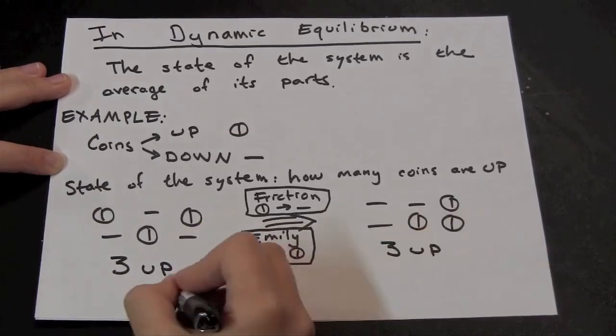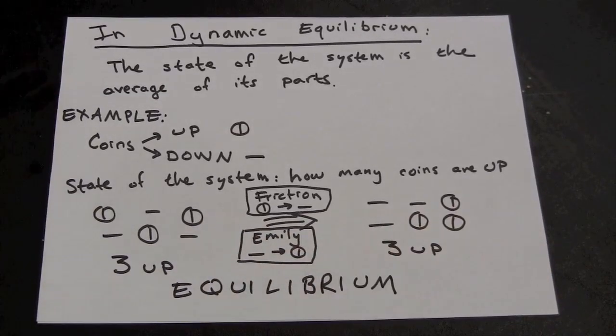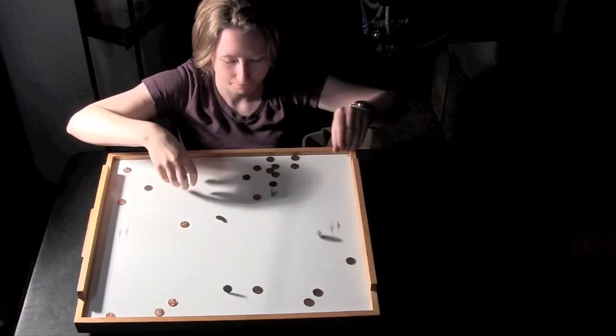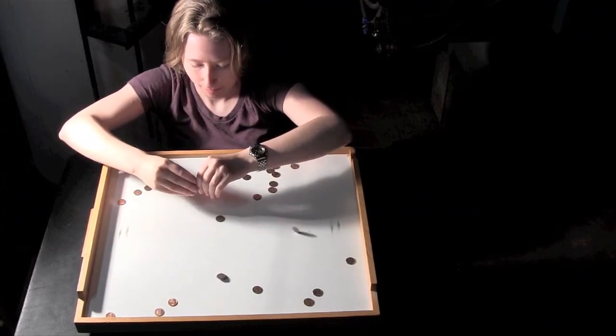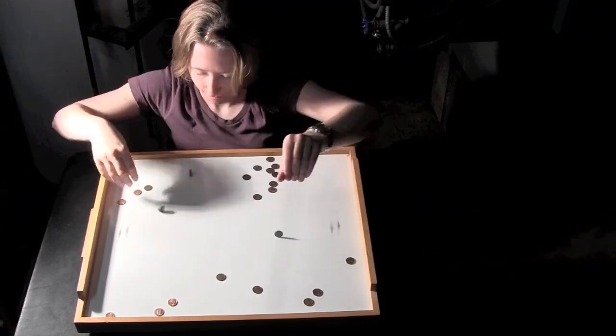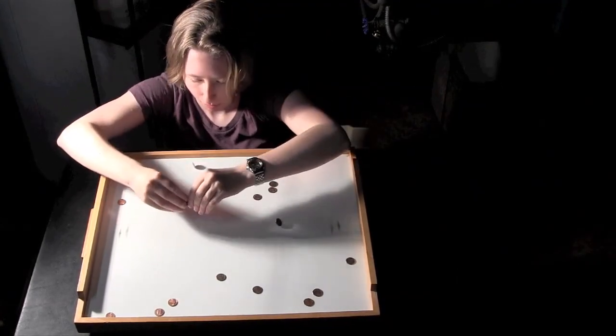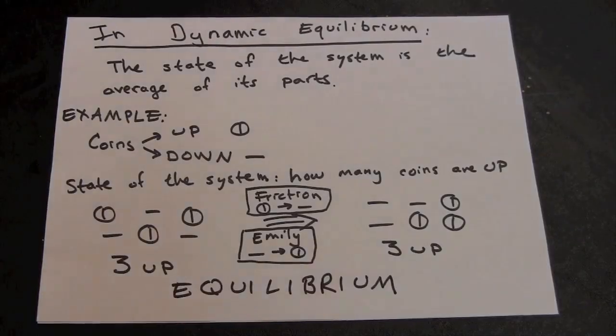So even though individual coins are changing, from spinning to not spinning, or from not spinning to spinning, the overall state of the system, how many coins are up, three, stays the same. That's why we call it equilibrium.